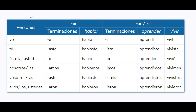So what we have, like I said before, is personas, which is people. We have here the subject pronouns, and then we have two columns: minus AR, then minus ER, minus IR. These are the three types of endings that you will always see in verbs in Español, especially regular verbs. This is for regular verbs.